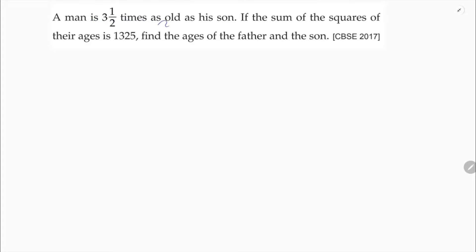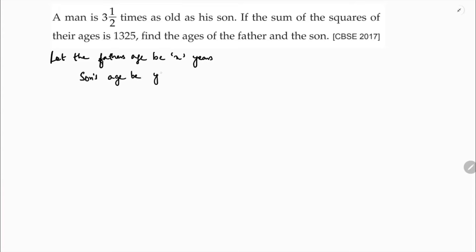A man is three and a half times as old as his son. If the sum of the squares of their ages is 1325, find the ages of father and the son. Let the father's age be X years and son's age be Y years.